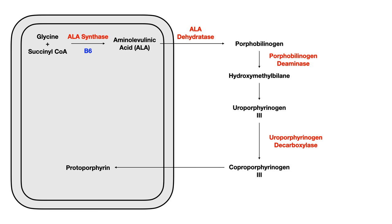Coproporphyrinogen 3 then travels back into the mitochondria. We've been in the cytosol for the past several steps, and now we go back into the mitochondria. Coproporphyrinogen 3 gets converted to protoporphyrin — again, you don't need to know that enzyme. Then back in the mitochondria, protoporphyrin gets converted by ferrochelatase into heme, using iron as a cofactor. That's the entire pathway from start to finish — that's how we make heme.